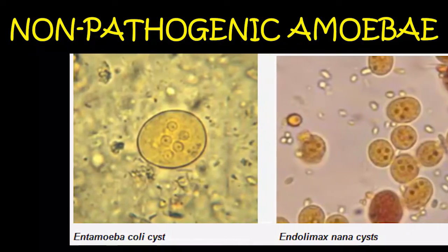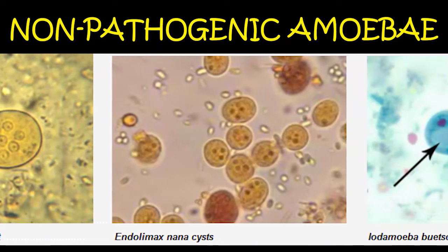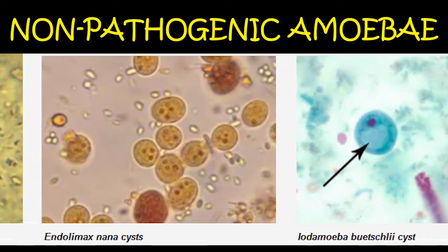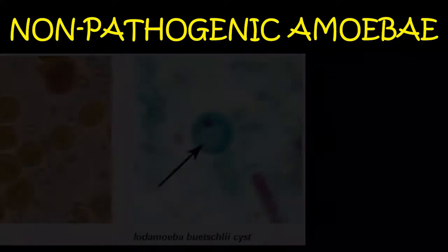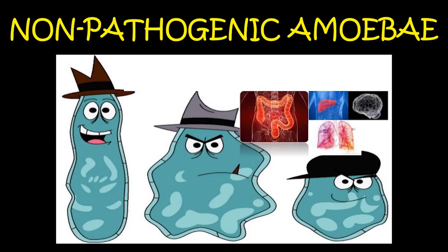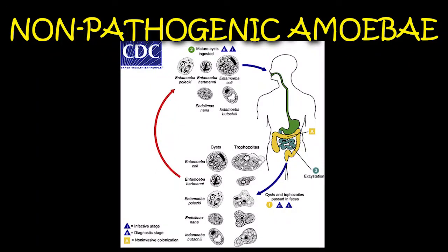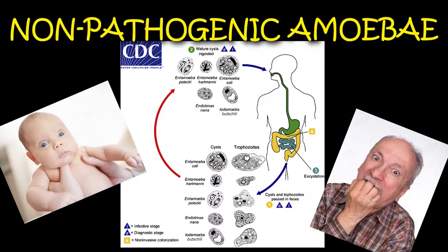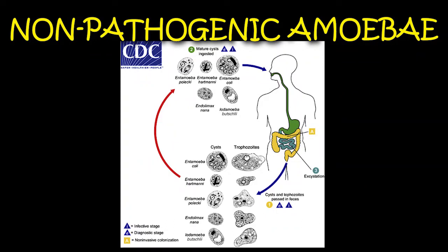Entamoeba coli has one to eight nuclei, usually more than four, with eccentric karyosomes. Endolimax nana is very similar to Entamoeba coli but with four nuclei. Iodamoeba butschlii has a large glycogen mass or vacuole. Entamoeba dispar is morphologically similar to the pathogenic Entamoeba histolytica; however, it is considered an intestinal commensal and is not capable of causing invasive or extra-intestinal complications. These organisms do not harm the body and are never associated with illness even in immunocompromised individuals. Persons found to have these protozoa and also have intestinal distress should be further examined for other causes of their symptoms.